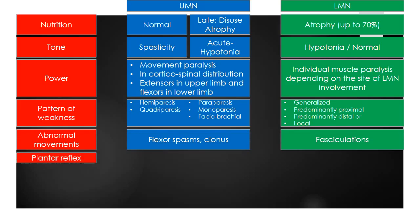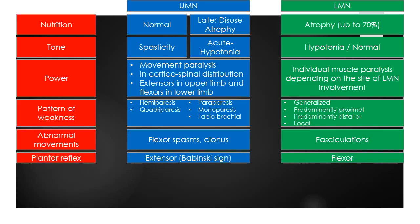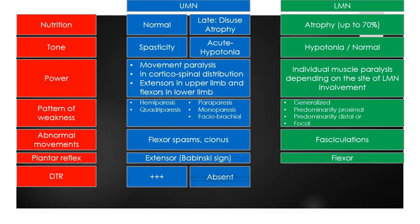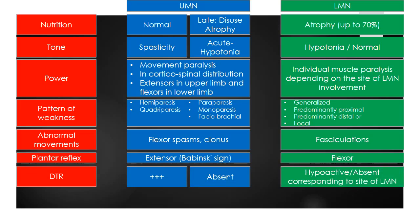Superficial reflexes are abnormal in UMN lesions. For example, the plantar reflex is extensor in UMN lesions, i.e., Babinski sign is positive, and the plantar is flexor, i.e., Babinski sign is negative, in LMN lesions. Deep tendon reflexes are usually hyperactive and clonus can be seen; however, in the acute stage they could be absent. Deep tendon reflexes can be hypoactive or absent corresponding to the site of LMN involvement.